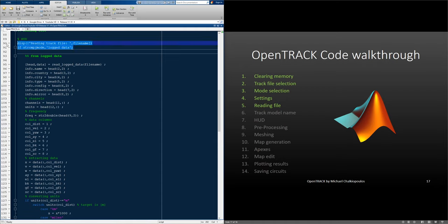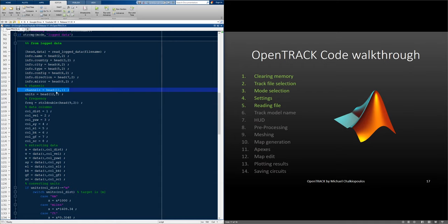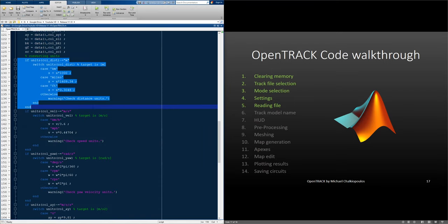First, we check if we are in the log data mode. Then, we extract the tracks information, the channels, the units, the frequency. We define the columns and extract the data from the data matrix to separate variables. Then, we go through and convert all the units. Here is where you will find how to spell every unit as well as add new conversions as well.